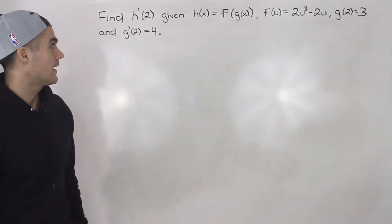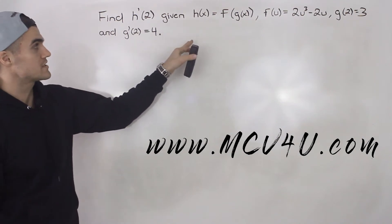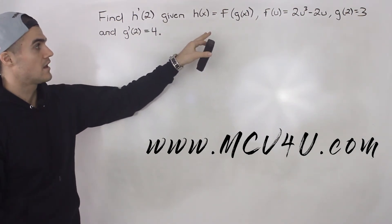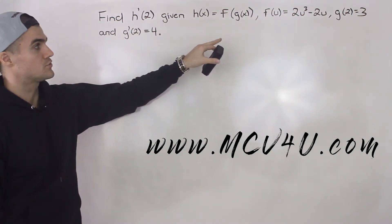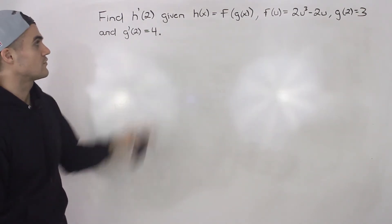Welcome back everybody, Patrick here. In this question we have to find h'(2) given h(x) = f(g(x)), f(u) = 2u³ - 2u, g(2) = 3, and g'(2) = 4.